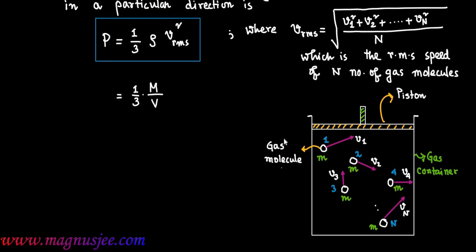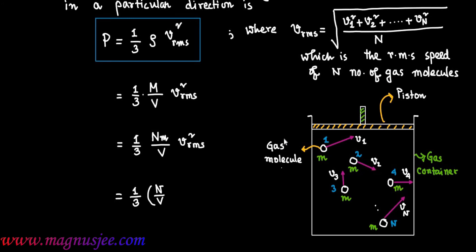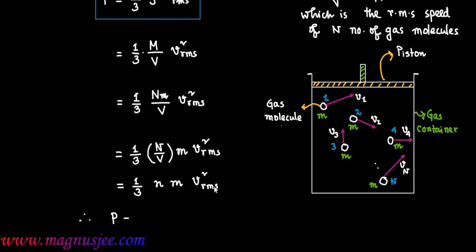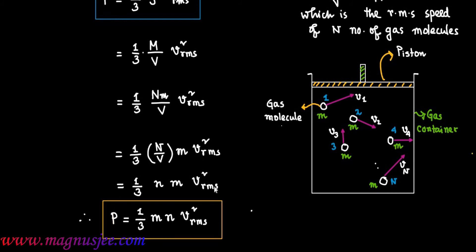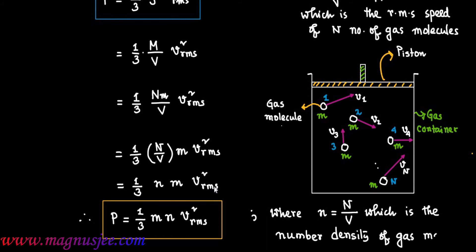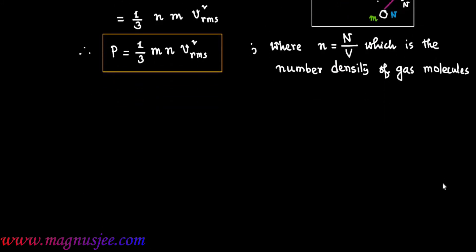We can also write P equal to one-third times capital M divided by capital V times V_rms squared. Substituting capital M equals Nm, this becomes one-third times Nm divided by V times V_rms squared. Writing n (lowercase) equal to N divided by V — the number density — we get P equal to one-third times m times n times V_rms squared, where small n is the number density of gas molecules, i.e., the number of gas molecules per unit volume.